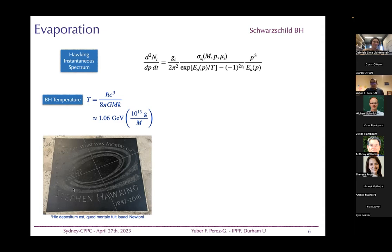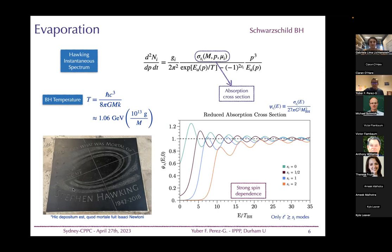There is an important quantity showing that Hawking evaporation is not exactly a blackbody: the so-called greybody factors, or absorption cross-sections. These account for the fact that emitted particles encounter a gravitational potential from the curved space around the black hole, which acts like a barrier causing back-scattering. This depends on particle energy, angular momentum, and spin — and we include this quantity in our work.